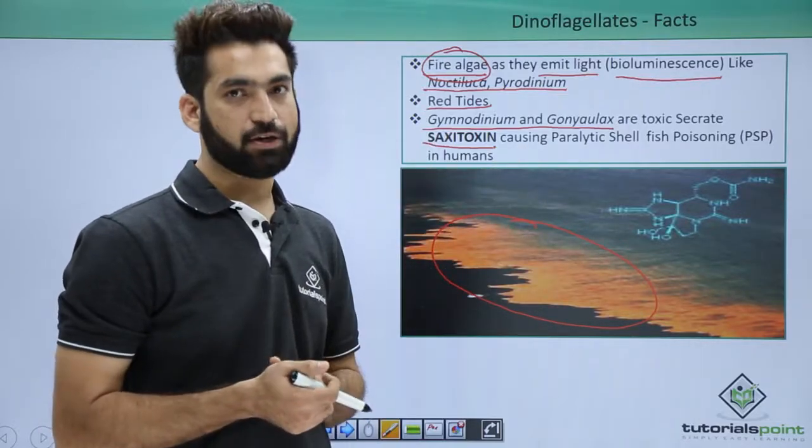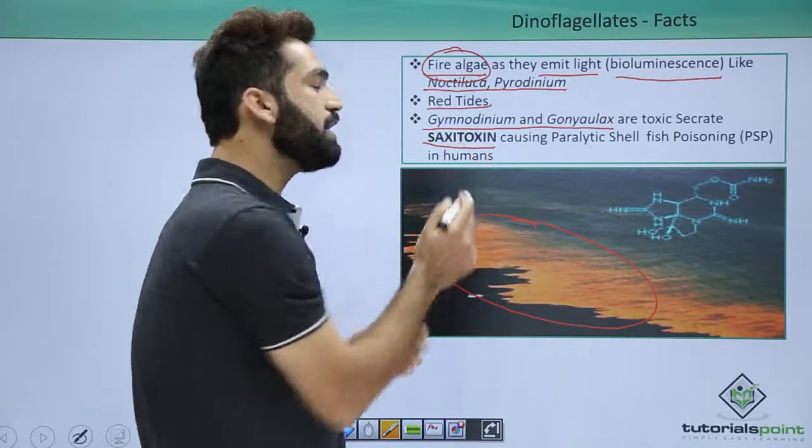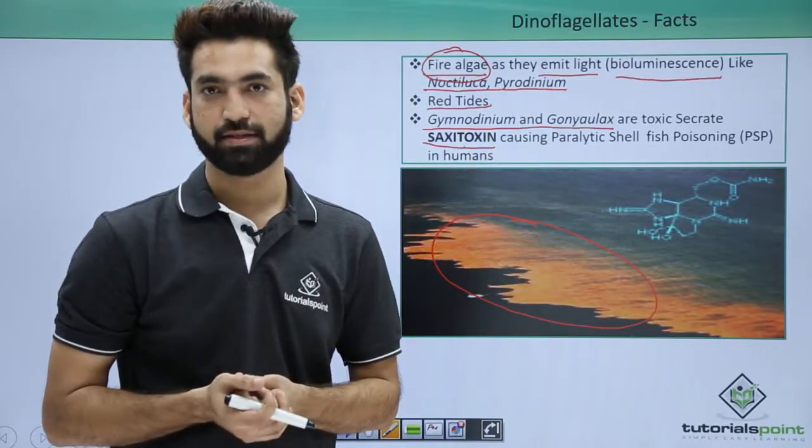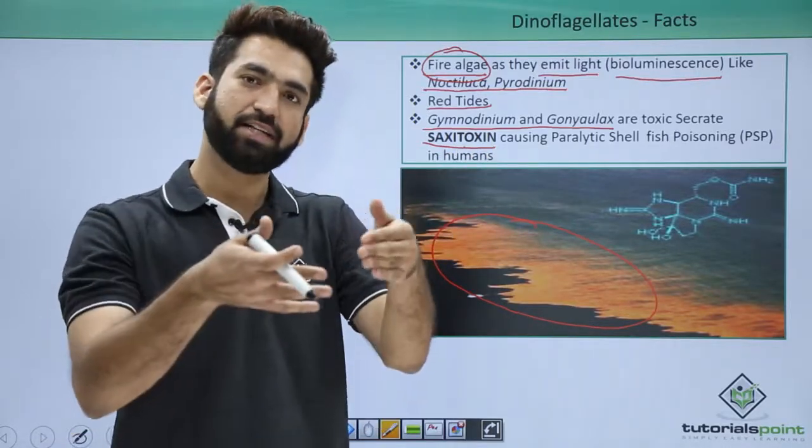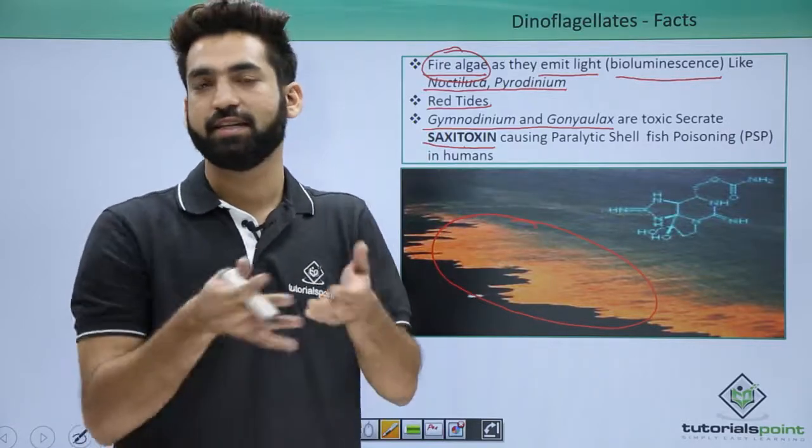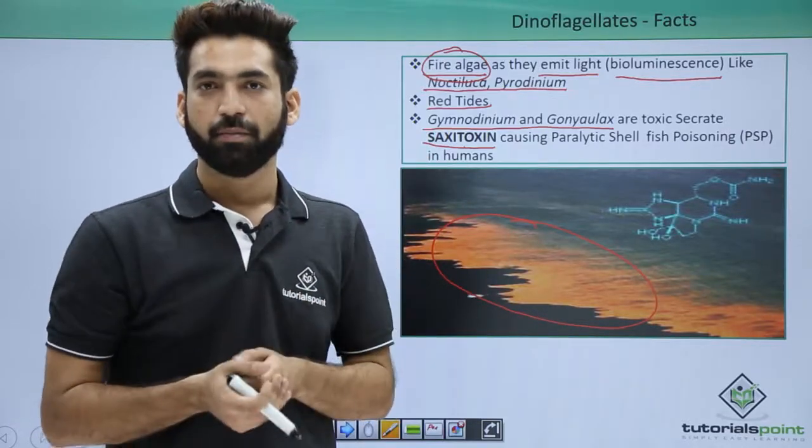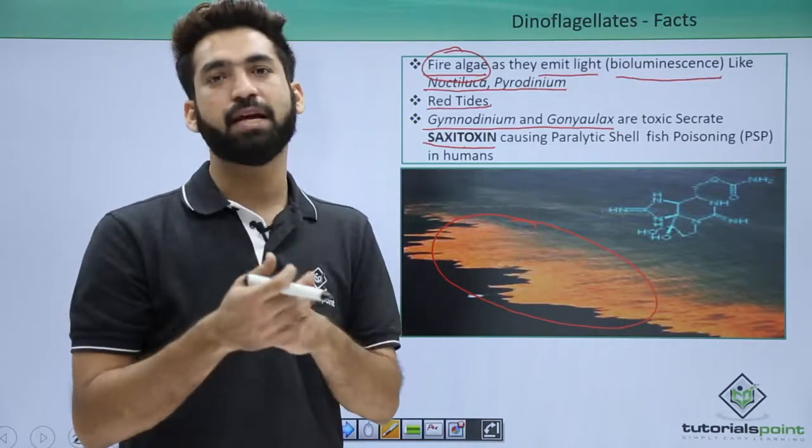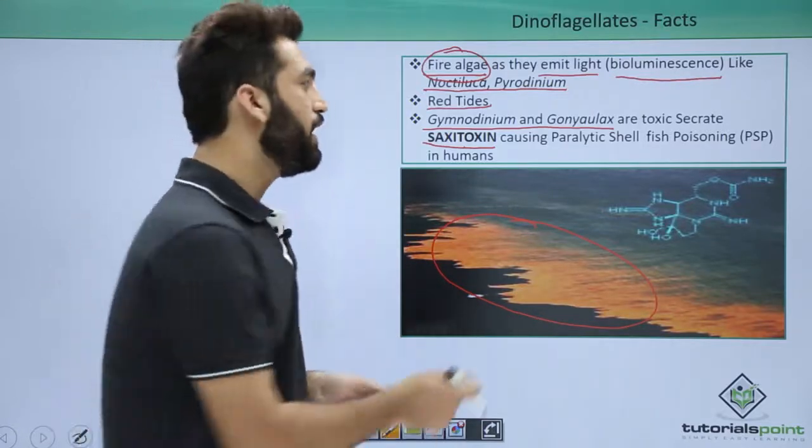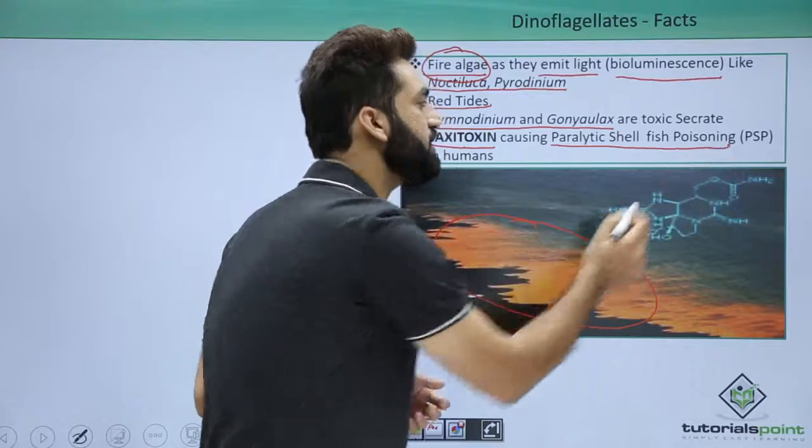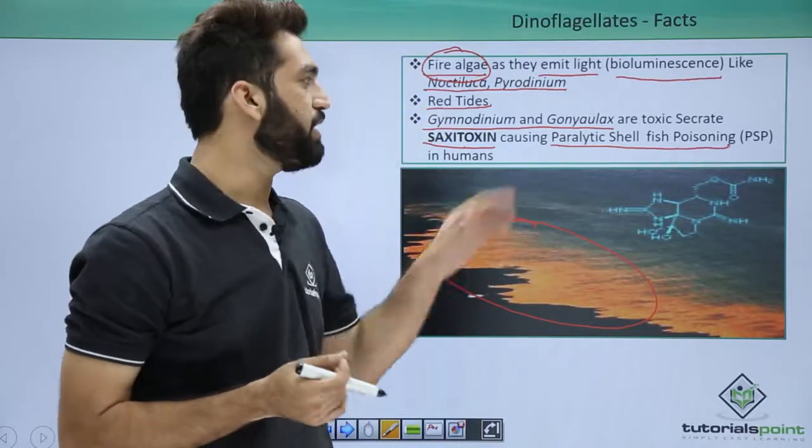These toxins are called saxitoxins and these toxins are engulfed by shellfish. When shellfish engulf this toxin, the shellfish won't have any effect, they won't die. But the time humans consume that shellfish, it causes a disease in humans which is a very important disease called PSP or paralytic shellfish poisoning.